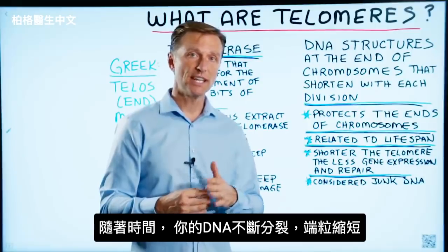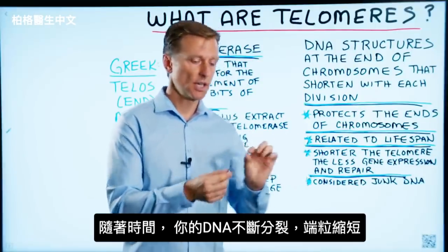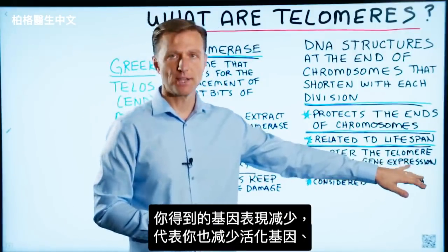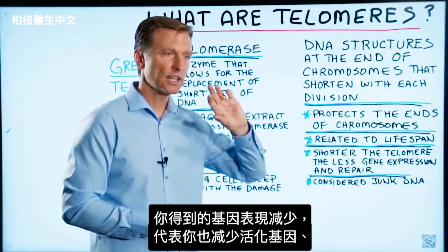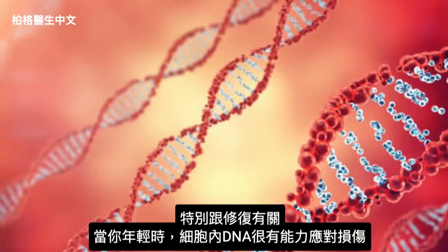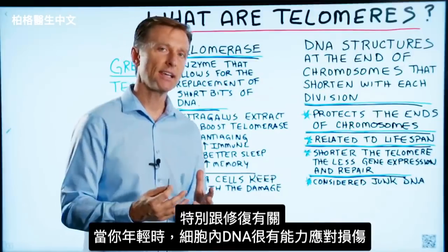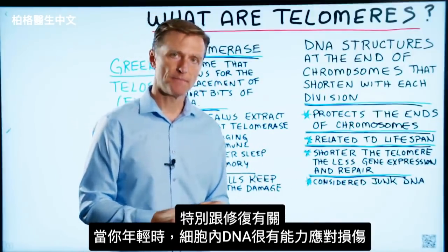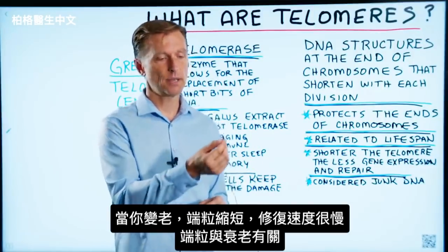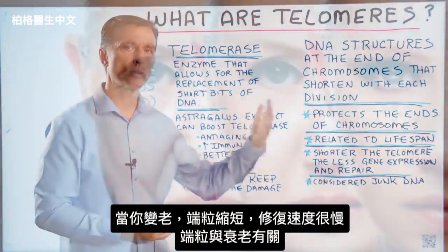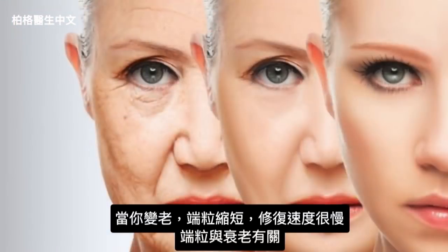Over time, when your DNA keeps dividing over and over, the telomeres shorten and you get less gene expression, which basically means you're getting less activation of certain genes, especially related to repair. When you're very young, your DNA inside your cells has a huge capacity to keep up with the damage. When you're older, because you have less telomeres, you basically have a hard time keeping up with the repair. And that's how it relates to aging.